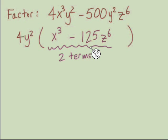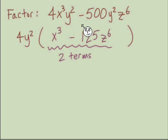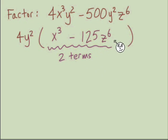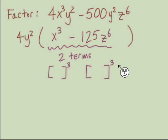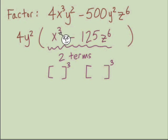It starts with: how many terms do we have? Two terms. So we set up brackets and think about what our exponent should be. When exponents are multiples of 3, we use exponents of 3 for cubes. Something to the third power equals x³, so the first box is x.